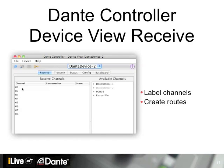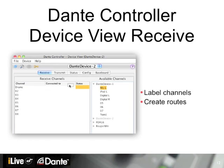In the Receive tab of the Device View, you can select any channel and apply a name. This helps you and others know what's being routed on your Dante network. You can also route signals here just the same as in the routing view — type in a name, then grab channels you want connected and drag them over. A connection is made just as in the routing view, and audio begins to flow immediately.